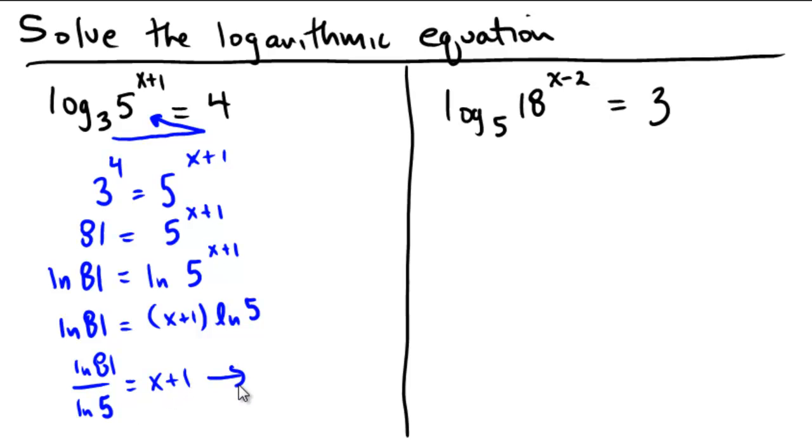So only one last step to isolate x, we would subtract 1 from both sides, and it looks like x equals ln of 81 over ln of 5 minus 1. And that would be the answer as an exact form.